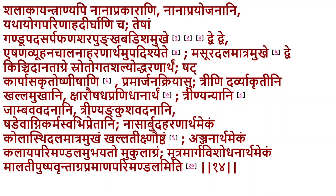One type is a spoon-like instrument used to remove objects from the srotas, similar to the Fogarty's technique. That covers the shalaka yantra. Masur dhara and karpasakrita ushnisha shalaka is the cotton bud, and Sushruta says you have six of them for swabbing — pramarjana kriya. A smooth spoon-like instrument is used to transfer fluid from one point to another.